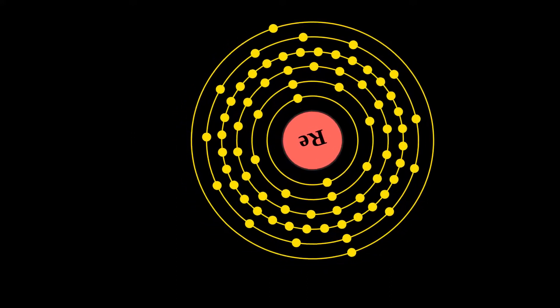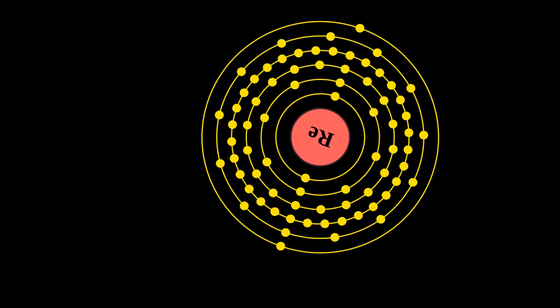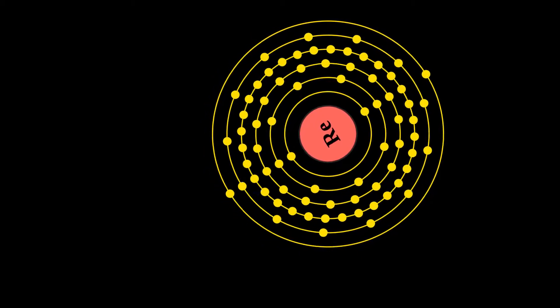It is a silvery-gray, heavy, third-row transition metal in Group 7 of the periodic table.